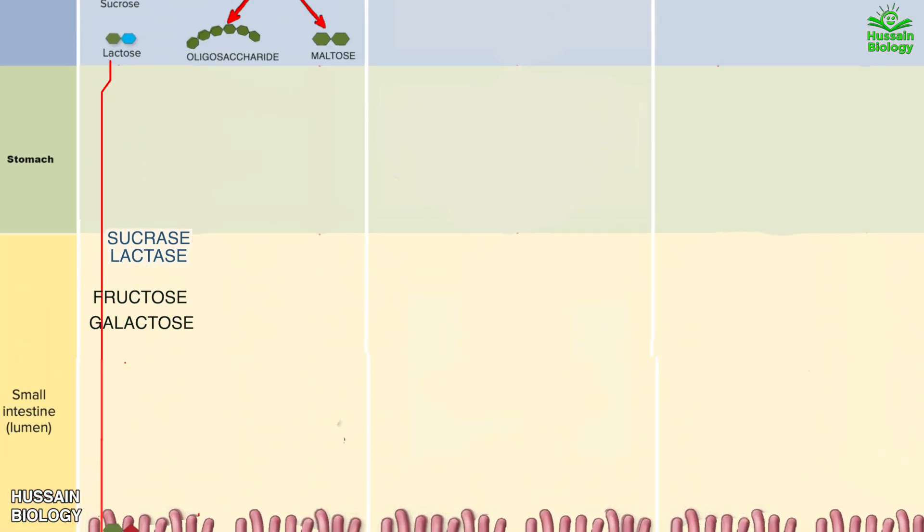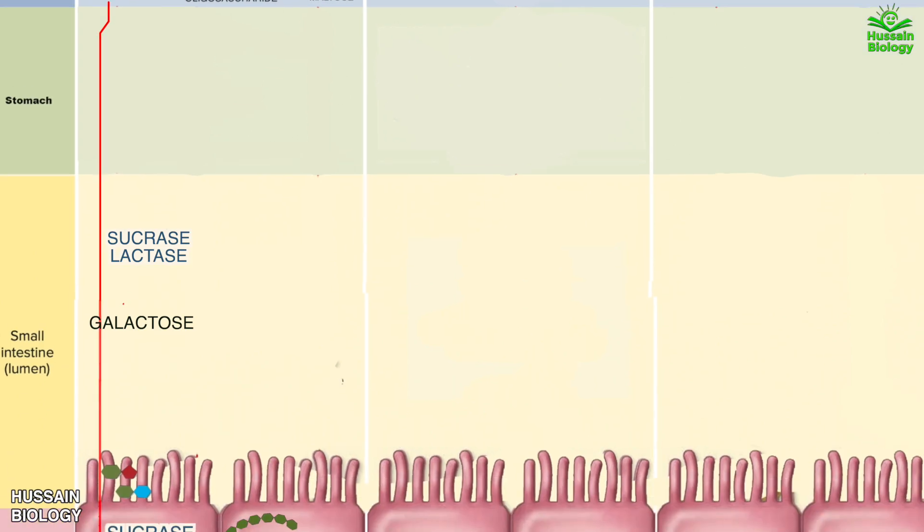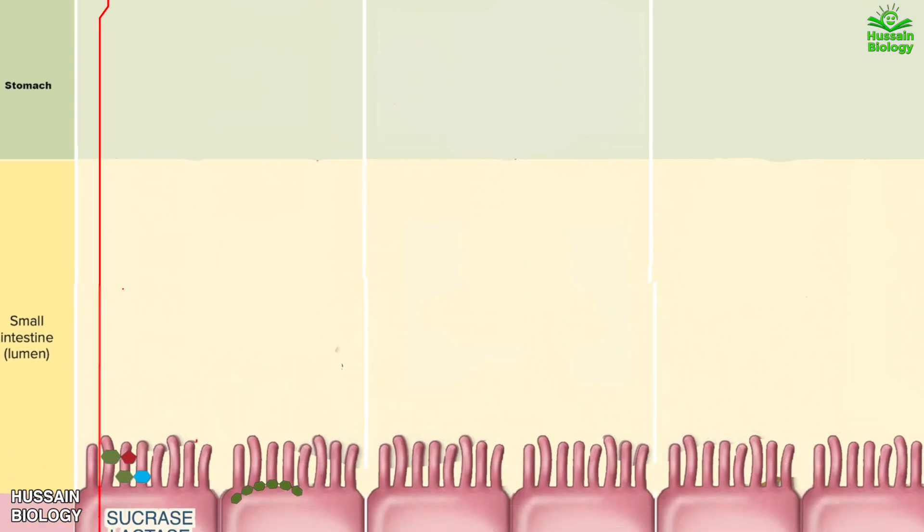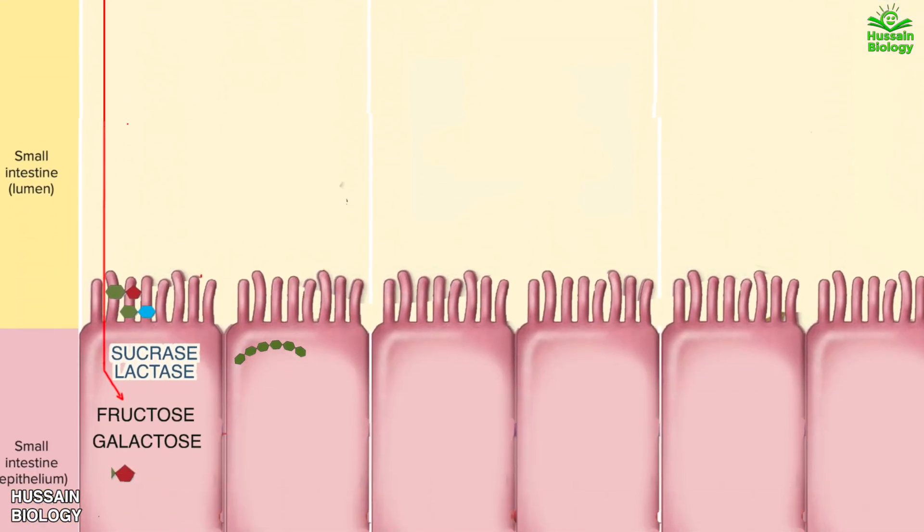On the other hand oligosaccharides directly get to the lumen of intestine and then into the brush border where they are acted upon by dextrinase, glucoamylase and converts it into glucose. Furthermore we also see oligosaccharides can also be acted upon by pancreatic amylase in small intestine lumen and gets converted into maltose which is again converted into glucose that finally enters the blood circulation.